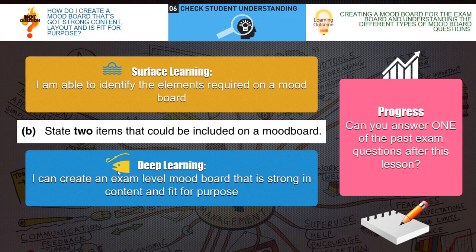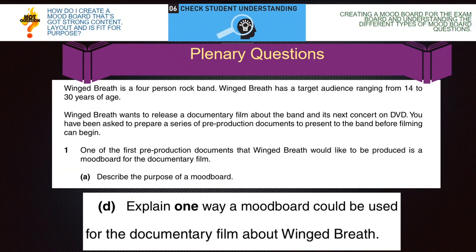Our deep learning outcome is: I can create an exam-level mood board that is strong in content and fit for purpose. Have a go at answering the following: Winged Breath is a four-person rock band with a target audience ranging from 14 to 30 years of age. Winged Breath wants to release a documentary film about the band and its next concert on DVD. You have been asked to prepare a series of pre-production documents. One of the first is a mood board for the documentary film. Describe the purpose of a mood board, and explain one way a mood board could be used for the documentary film about Winged Breath. Pause the video and have a go.